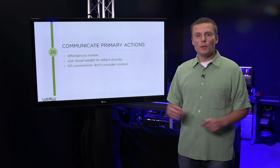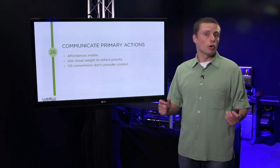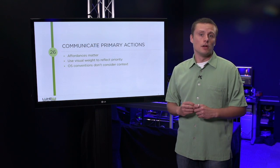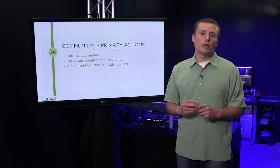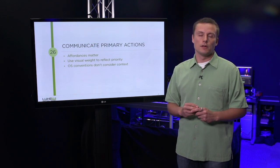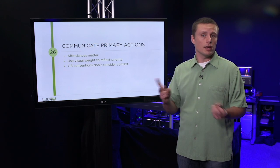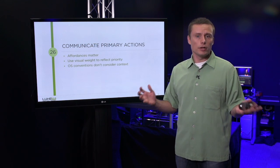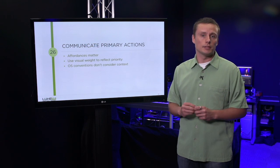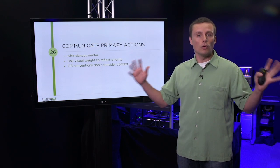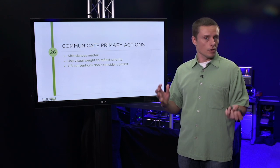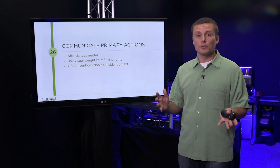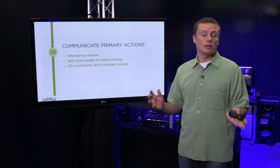We've got a couple of ways to make primary actions feel as important as they actually are. We can use affordances to make sure it's clear they're interactive, and we can use visual hierarchy to give each primary action the weight it deserves. Note that in both the iOS and Android examples, I deviated a little from OS conventions — because operating system conventions aren't tied to a specific context. When you have a critical flow or important interaction for your users, it may make sense to deviate from those standards to allow people to do what they need to get done.